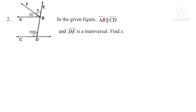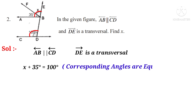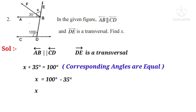Problem 2. In the given figure, AB is parallel to CD and DE is a transversal. Find X. Solution: Given AB is parallel to CD and DE is a transversal. From the figure, X plus 35 degrees equals 100 degrees because corresponding angles are equal. So X equals 100 minus 35 equals 65 degrees.